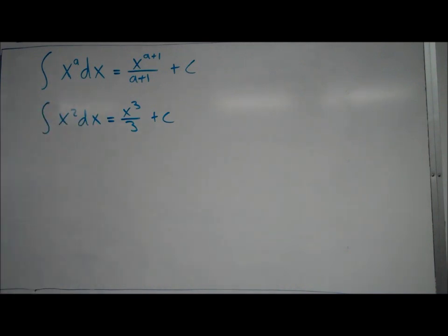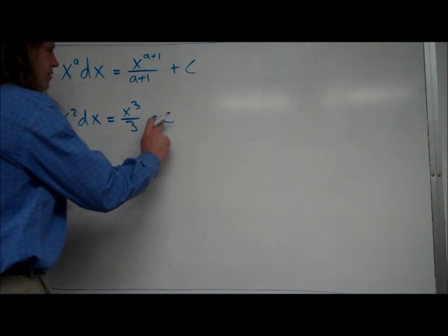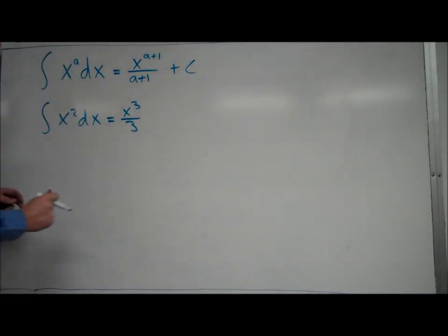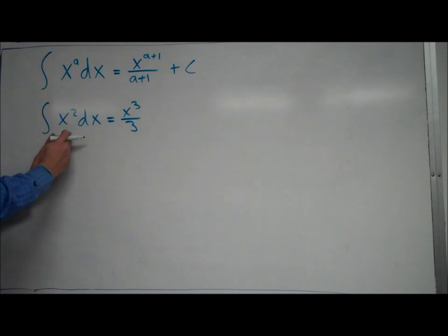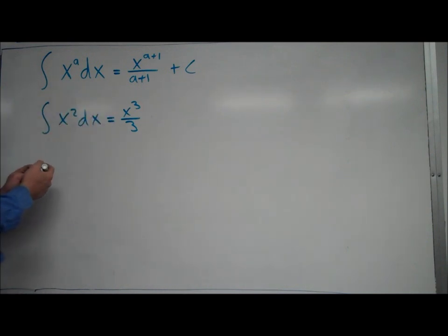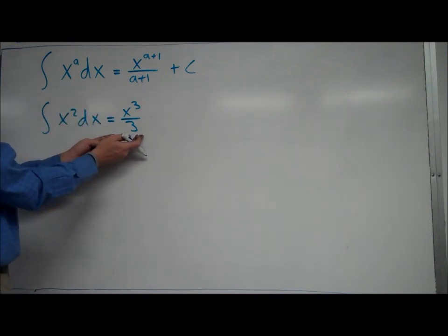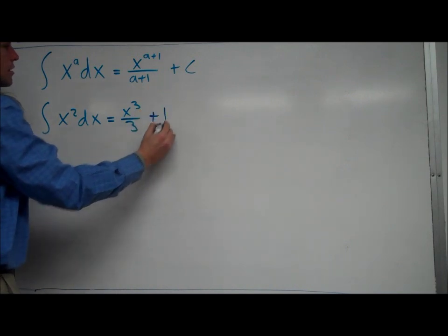All right, now this plus c thing, why do we put that there? Well, let's think of that. Let me erase it for a second here. What we're trying to come up with for the antiderivative of x squared is a function that when we take the derivative of it, it will equal x squared. Well, the idea is, sure, this function would work right here, but so would this.